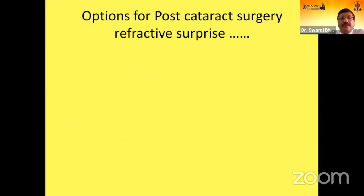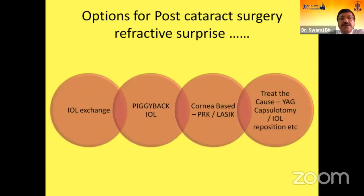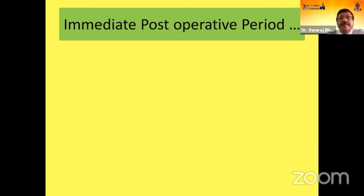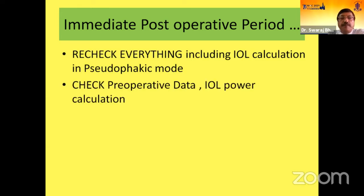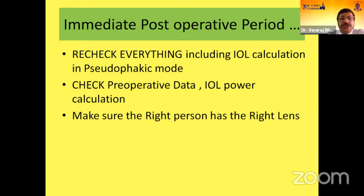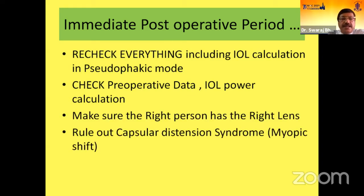The options available are IOL exchange, piggyback IOL, cornea-based PRK and LASIK, and treating the cause like YAG capsulotomy and IOL repositioning. In the immediate postoperative period, recheck everything including IOL calculation in the pseudophakic mode. Check the preoperative data and IOL power calculation. Make sure the right person has the right lens and rule out capsular distension syndrome.